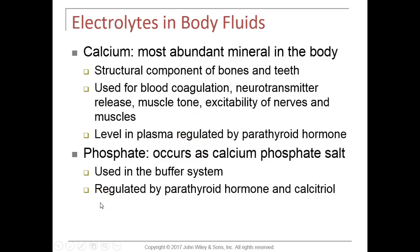Phosphate is the major anion in body fluids used as a buffer. It is also regulated by parathyroid hormone and calcitriol. Whereas PTH and calcitriol try to increase blood calcium levels, they tell the kidney to excrete phosphate out in urine because too much phosphate in blood can get toxic. So PTH and calcitriol increase calcium but decrease phosphate by causing the kidneys to excrete it.